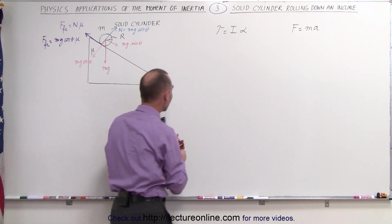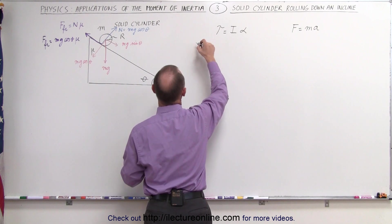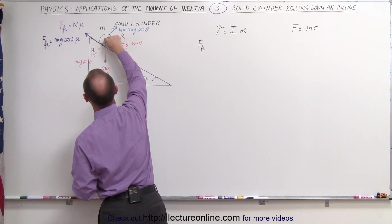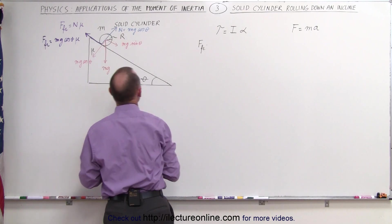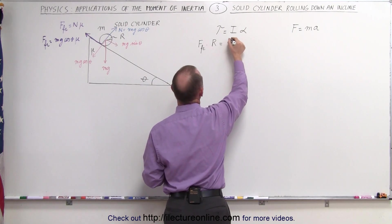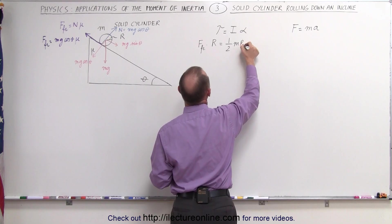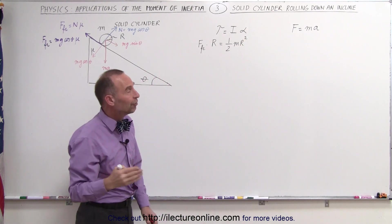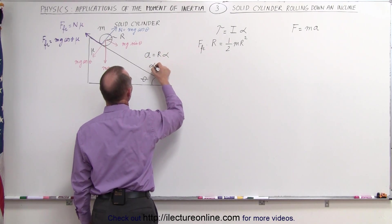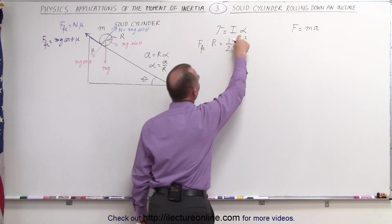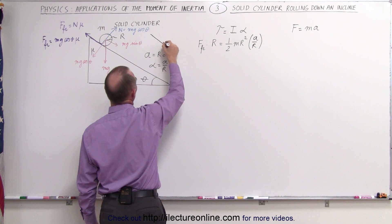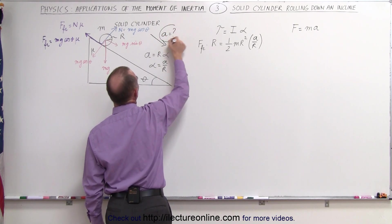The torque is caused by the friction force multiplied by the perpendicular distance from the line of action of force to the point of rotation, which is the center of the disc — the distance r away from where the force acts. So the friction force times r is equal to the moment of inertia. Since it's a solid cylinder, that's one-half the mass times the radius squared, times alpha, the angular acceleration. We know that the tangential acceleration equals r times the angular acceleration, so the angular acceleration equals a divided by r. So instead of writing alpha, we write a divided by r.